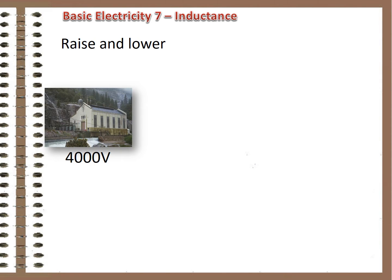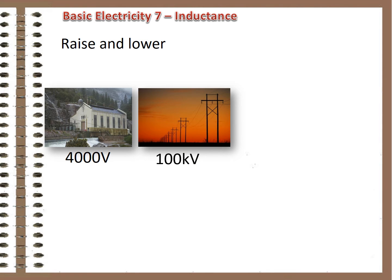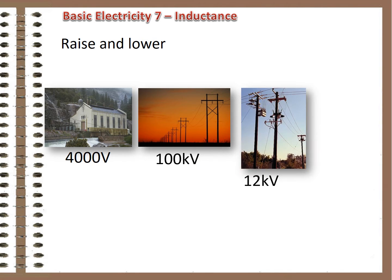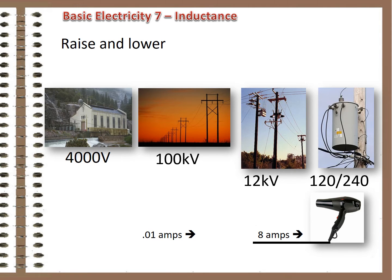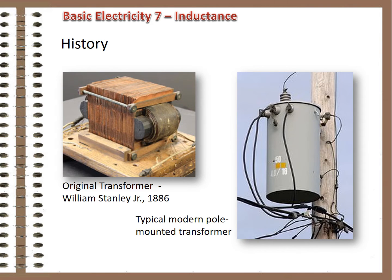So we might generate power at, say, 4,000 volts, raise the voltage up to 100,000 volts in order to move it a long distance, drop it down to 12,000 volts to distribute it locally, and then drop it to 240 or 120 volts to bring it into your house. So the 8 amps of current that it takes to power your hairdryer at 120 volts was transmitted to you at 100,000 volts and one one-hundredth of an amp of current. Transformers allow us to make those changes easily, and their invention in the 1880s led to the development of modern AC systems.